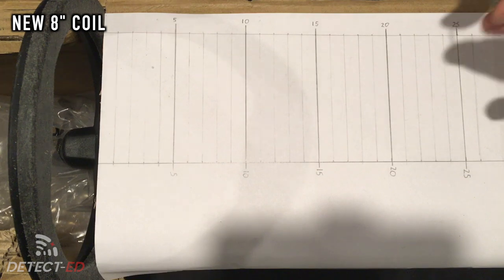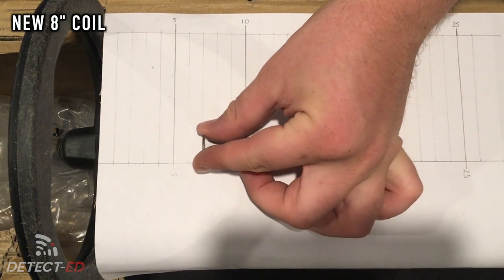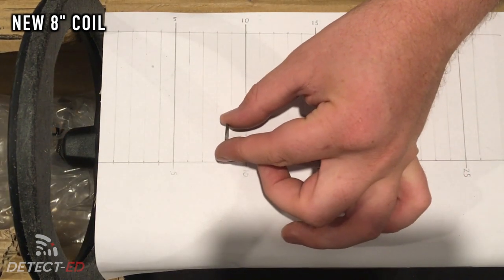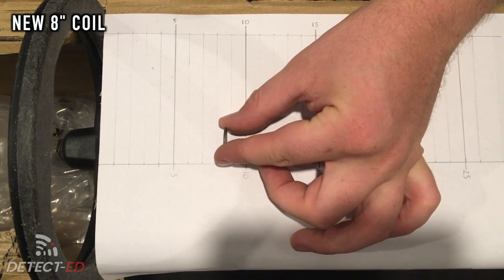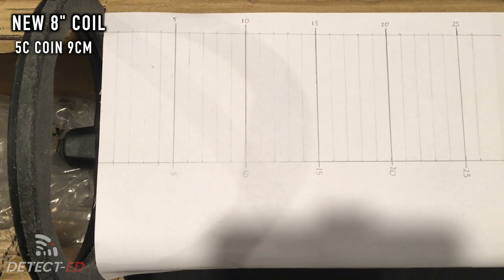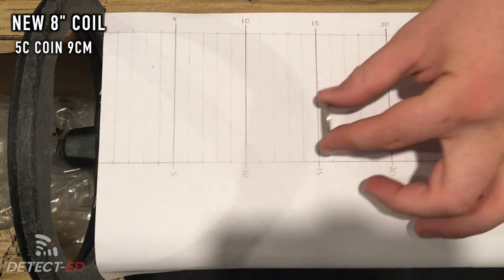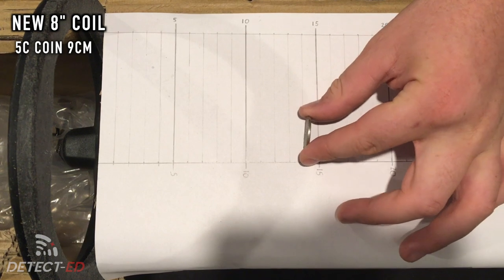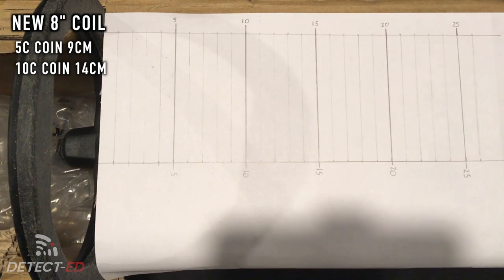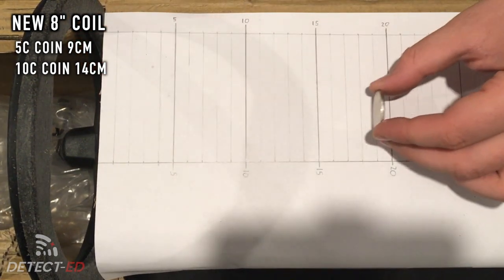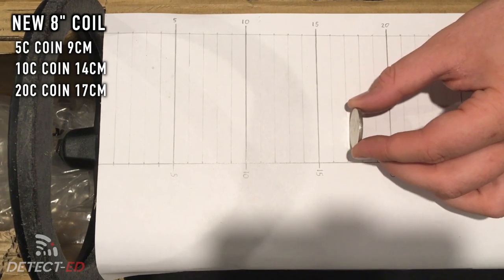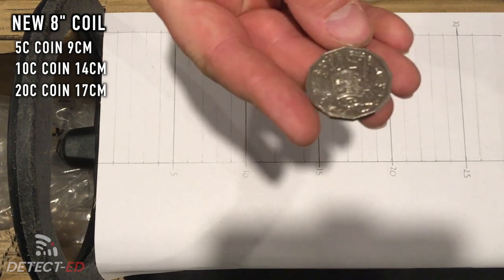Starting with 5 cents, we're looking at about 8.5 centimeters, you can do 9. We've got a 10 cent coin, so we're looking at 14 centimeters there. We've got 20 cents, 17 easy.